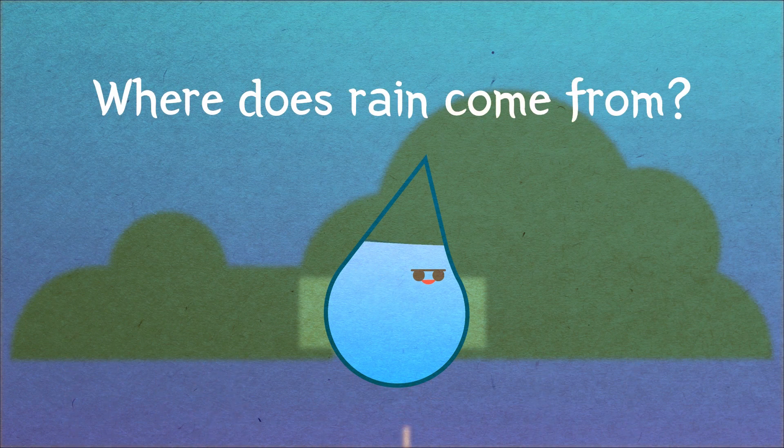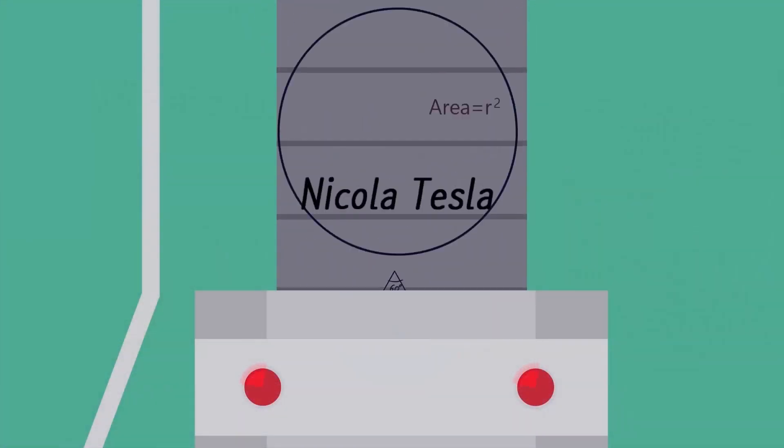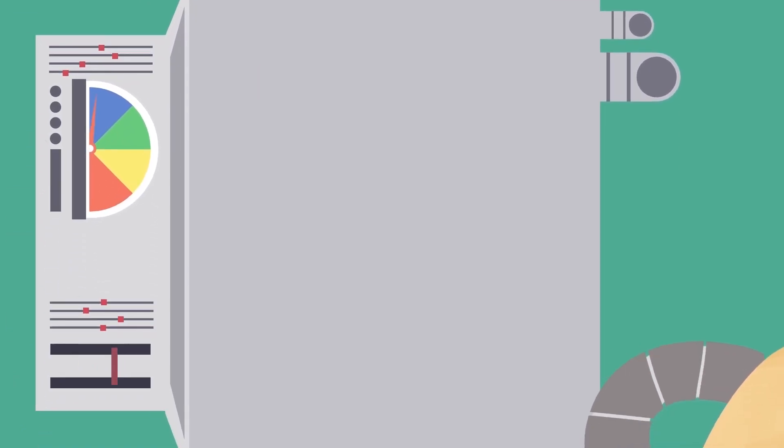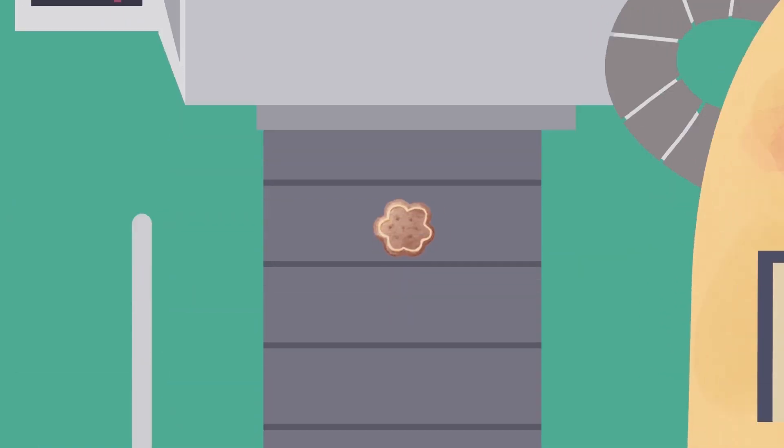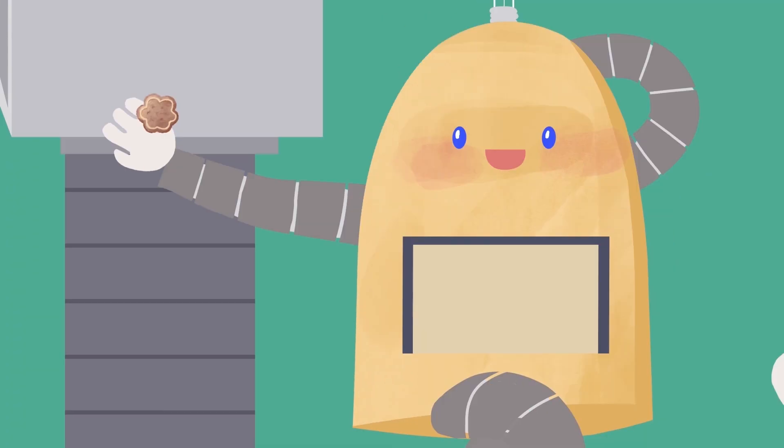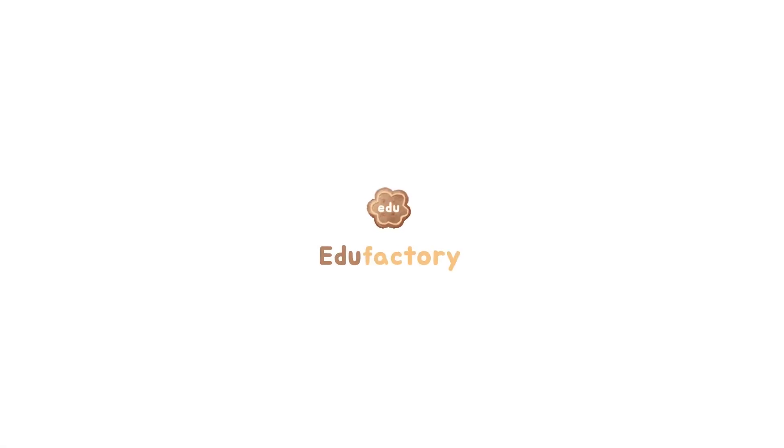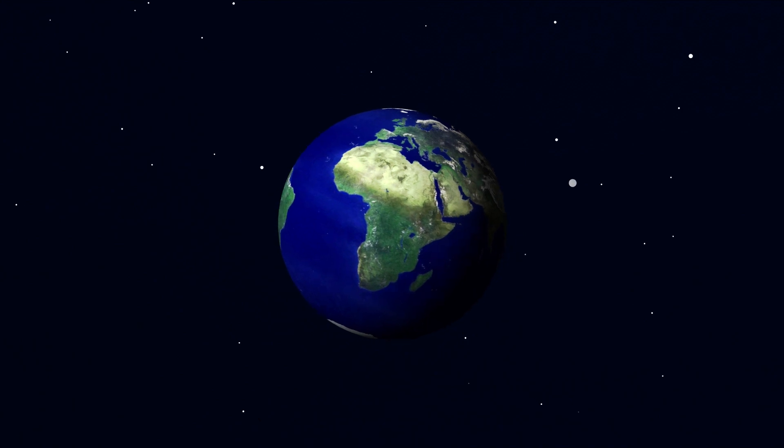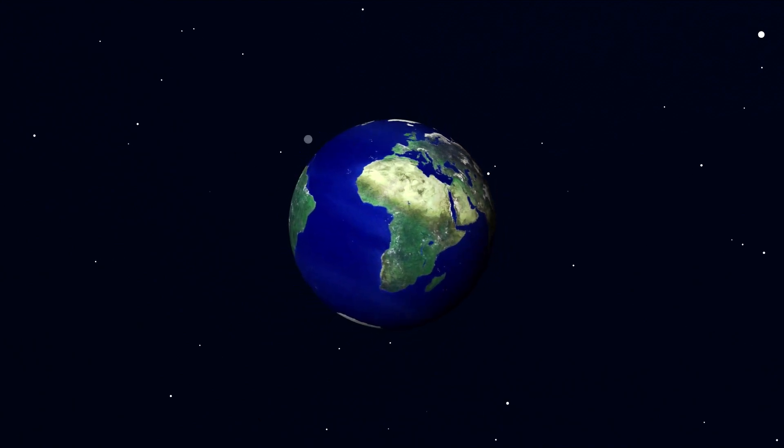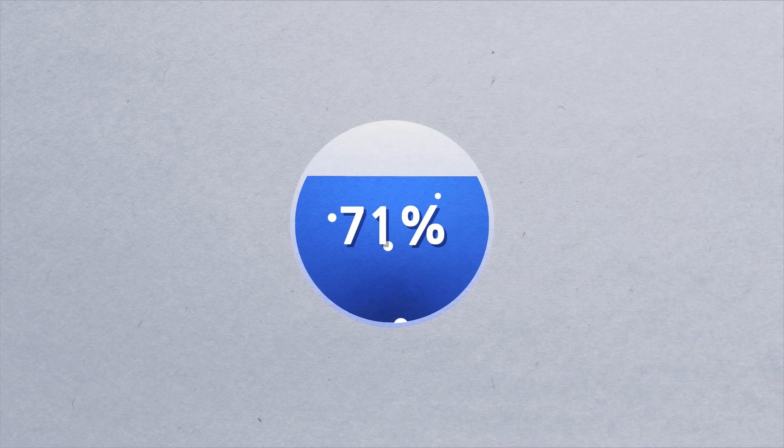Where does rain come from? When you see the Earth from outer space, it is mainly covered in blue. This is because 71% of the Earth's surface is covered by water.